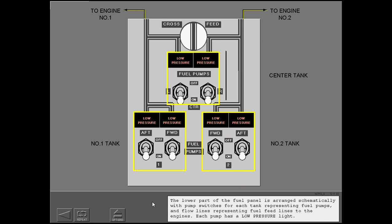The lower part of the fuel panel is arranged schematically with pump switches for each tank representing fuel pumps and flow lines representing fuel feed lines to the engines. Each pump has a low-pressure light.